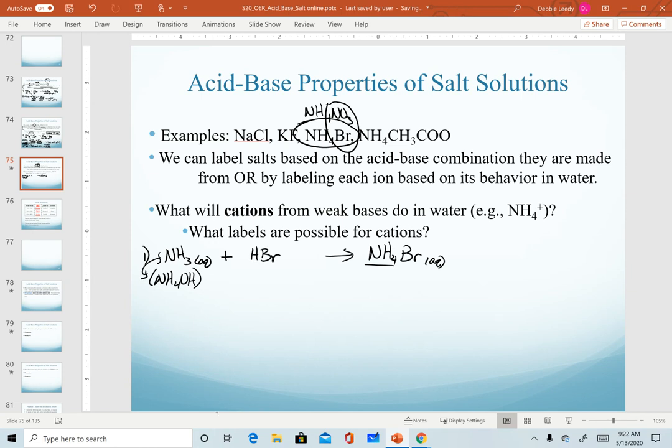Ammonia is my weak base that gave me the ammonium ion. And then, of course, bromide came from hydrobromic acid. So here we see that ammonia is a weak base. Hydrobromic acid is a strong acid. This gives us an acidic salt, where we predict our pH to be less than 7.